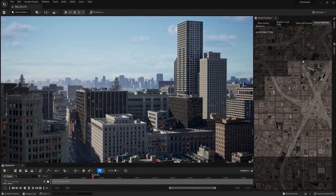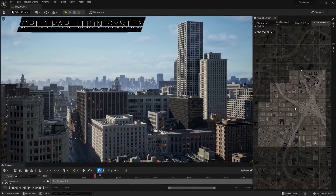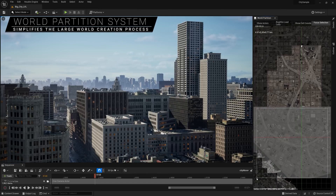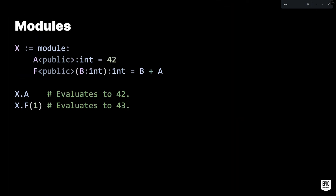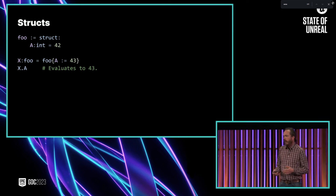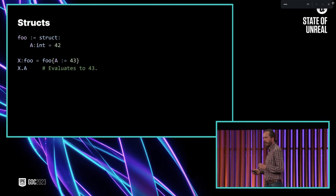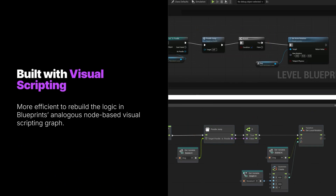This makes Unreal Engine 6 feel solid and powerful right from the start. All of this together means UE6 could truly change the game. You have top-tier visuals running in real time, inside a clean and rebuilt environment, using a brand new programming language. No plugins, no extra tools. You won't need to wait for long compiles anymore. Everything just works fast and direct.